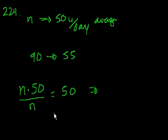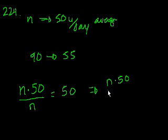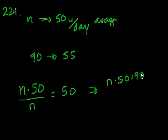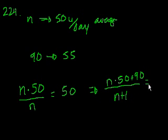If I want to average in this 55, what happens is I get n times 50 — that's the sum of the total production for the n days before. Then I add the production for today, which is 90, and divide by n plus 1 days. The new average is 55.